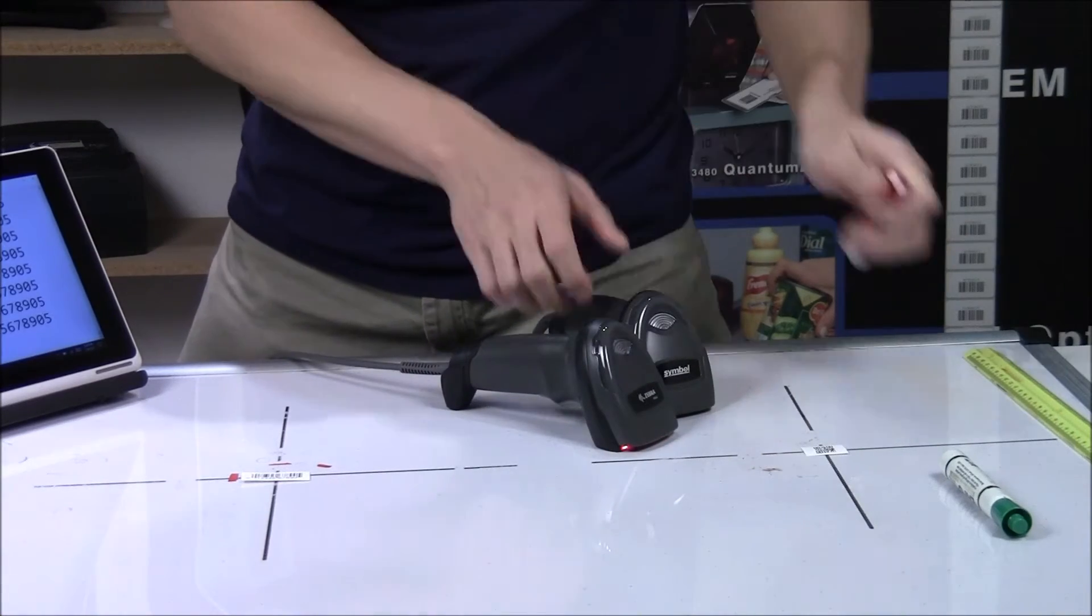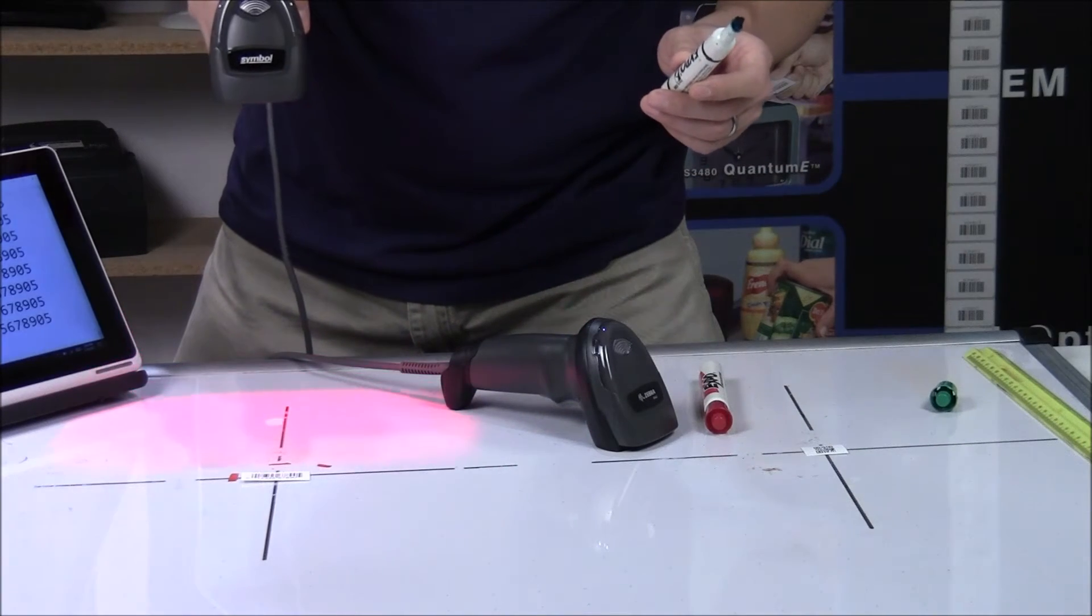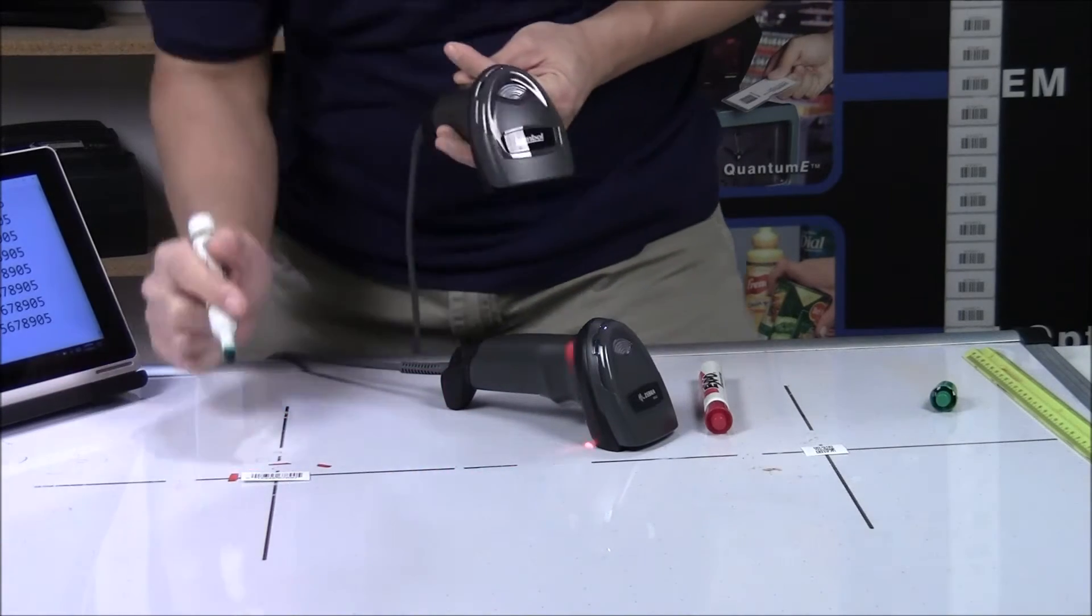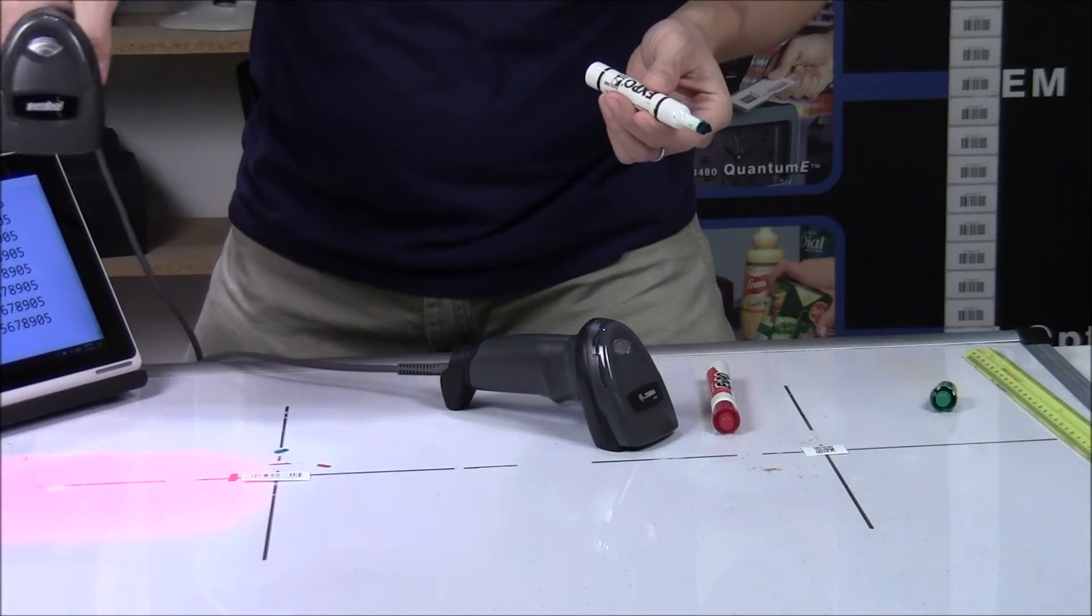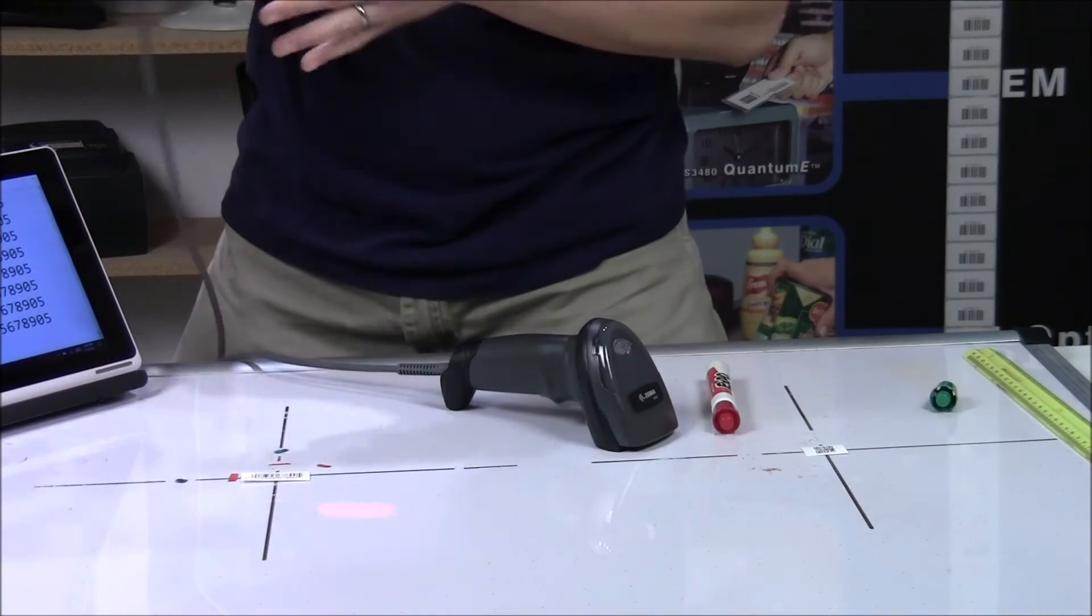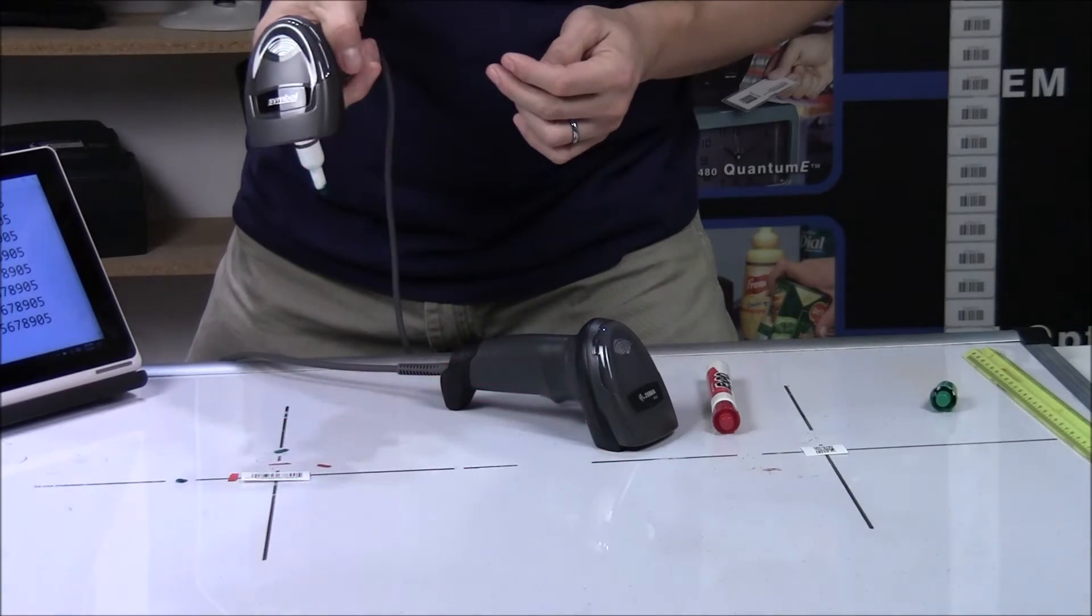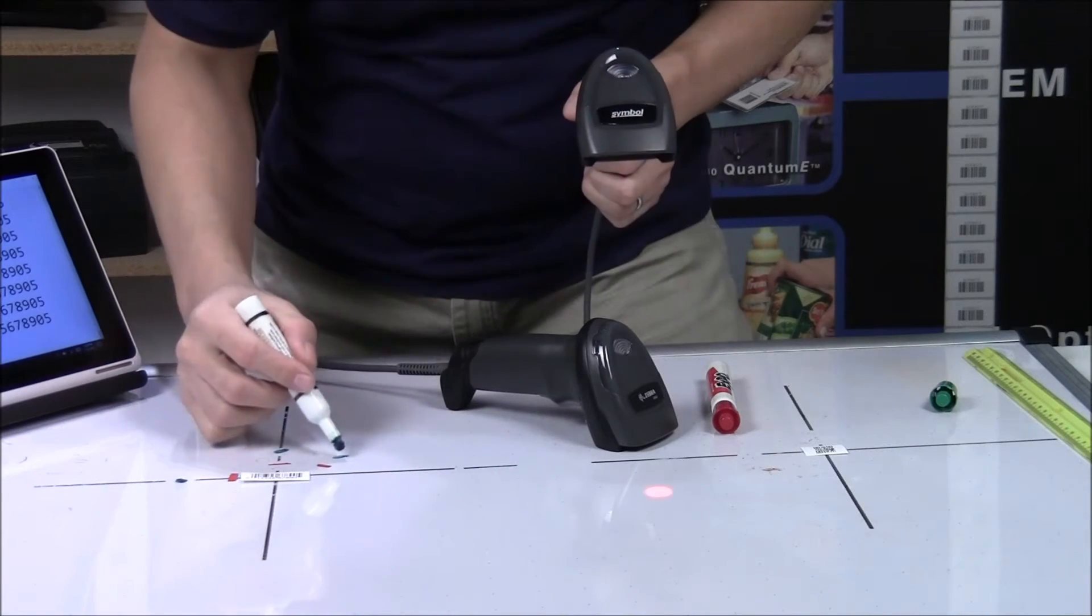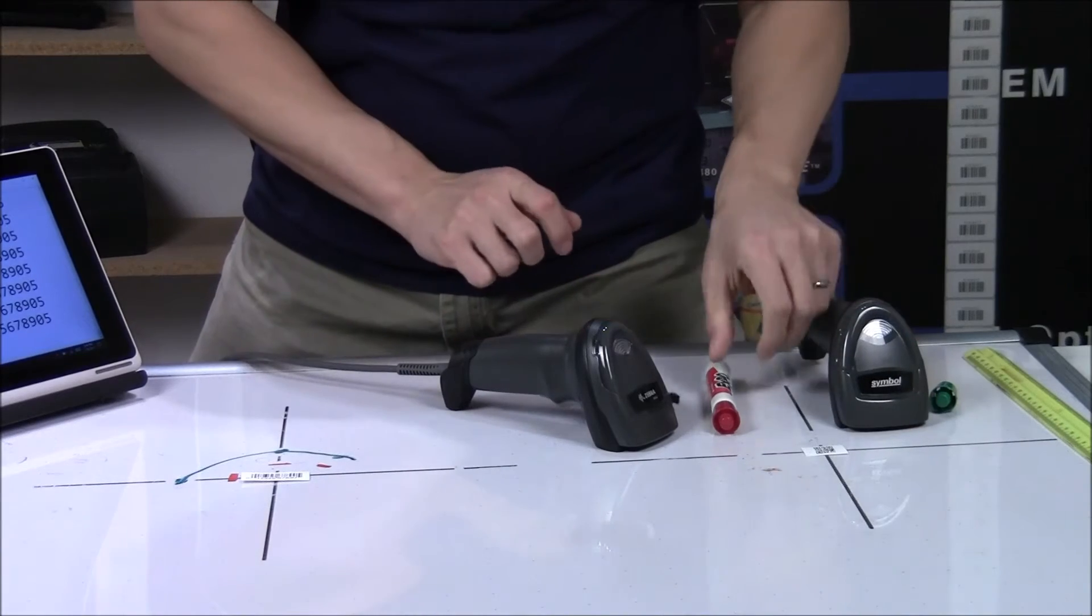And then, we'll try the 4308 and show the same thing. So, I'm going to come up from the bottom. Put the mark here. Come up from the side. Mark there. And then, diagonal. And then, if you kind of draw a circle.